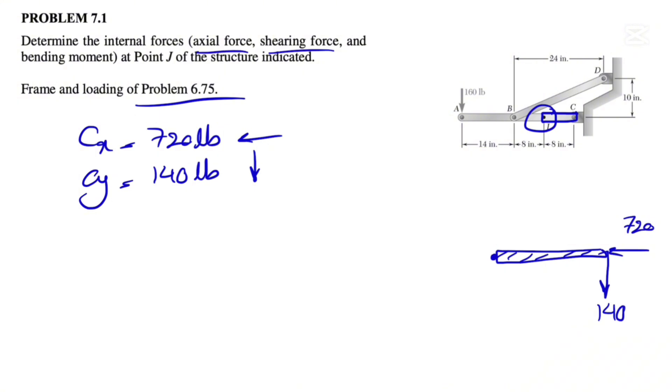As I mentioned, we have CX to the left 720, we have CY downward 140, and this is our point J. We have one axial force, one shearing force, and one bending moment. We can show forces with F, V and consider a moment M, which is going to cover all the three reactions that we have at that point.